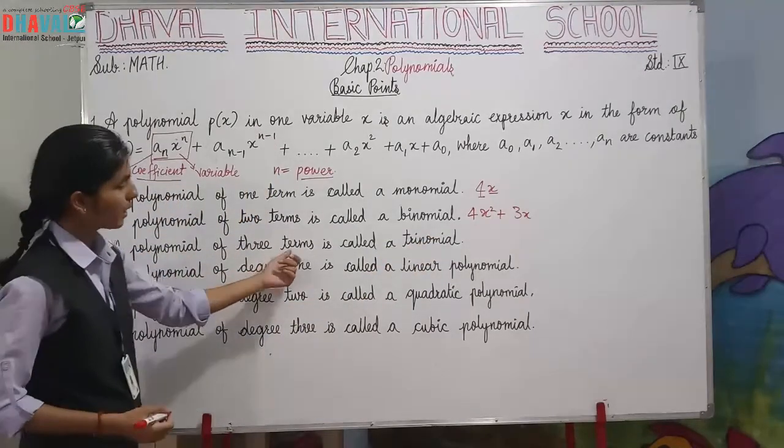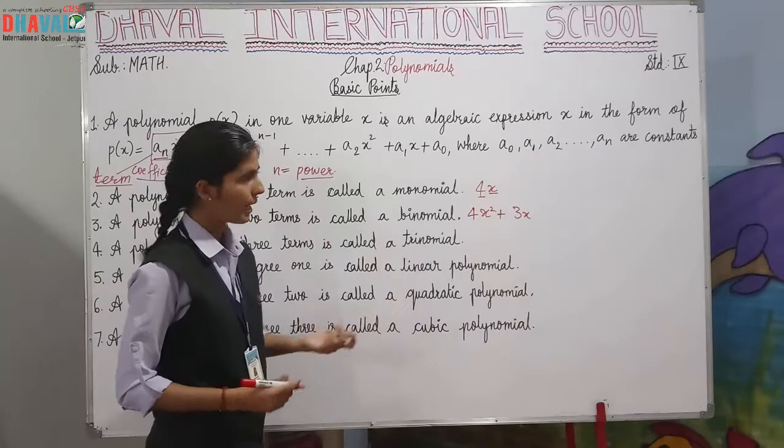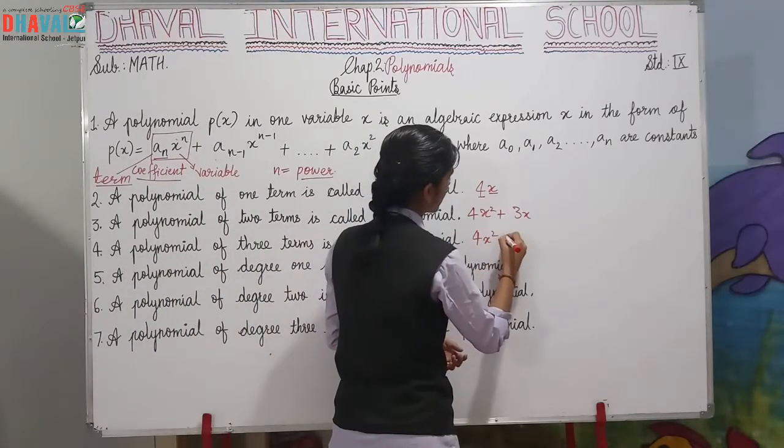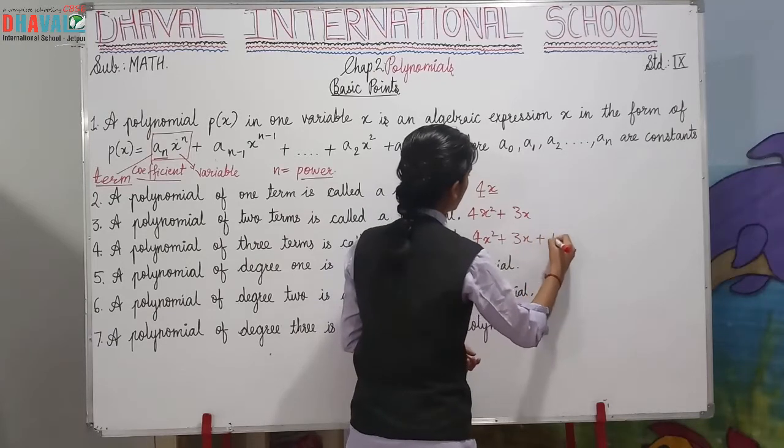Then a polynomial of three terms is called a trinomial. Likewise, if we have three terms, then we call this trinomial.